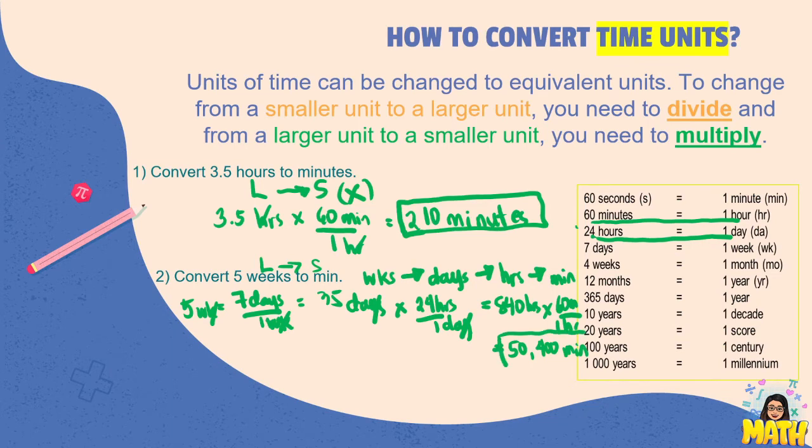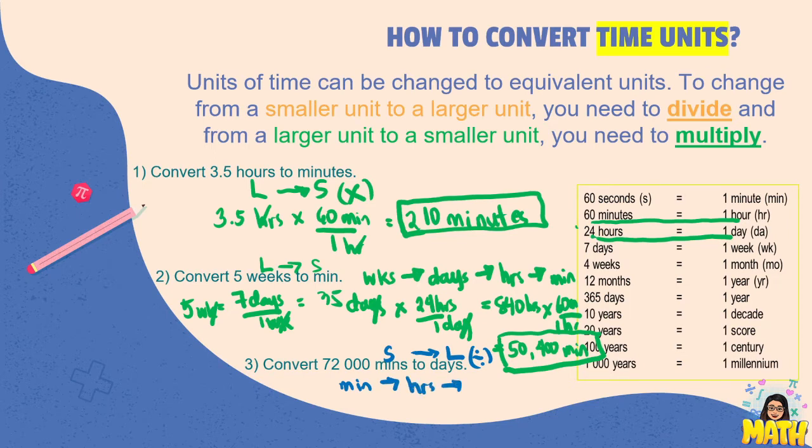So this is how we convert weeks into minutes. And then let's convert 72,000 minutes to days. This time this is smaller unit to larger or longer unit, so here we will be using division. Again, we do not have a direct conversion from minutes to days. We need to convert it first into hours before converting it into days.